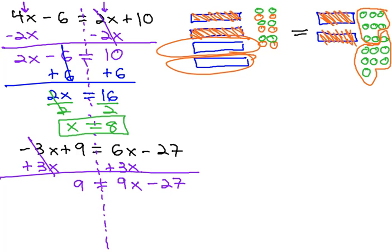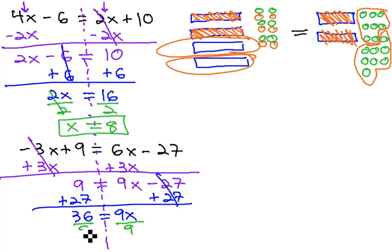We can now solve the remaining two-step equation by adding twenty-seven to both sides, so the twenty-sevens subtract out, giving us thirty-six equals nine x, and finally dividing both sides by nine, to get x equals four.